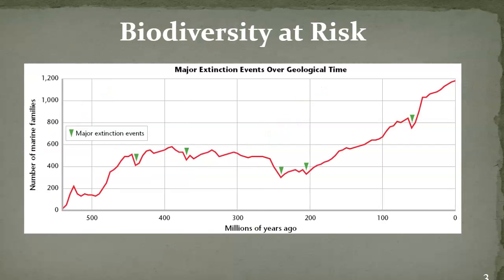We look at major extinction events. Everywhere on this graph where you see a green arrow pointing and a drop in the number of marine families, we're looking at a loss of biodiversity. These are going to be considered major extinction events because our biodiversity numbers drop, sometimes hundreds, maybe even thousands of species.